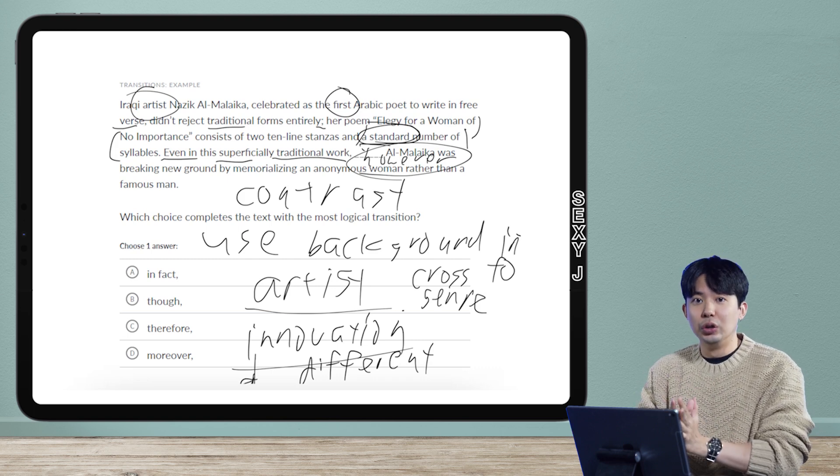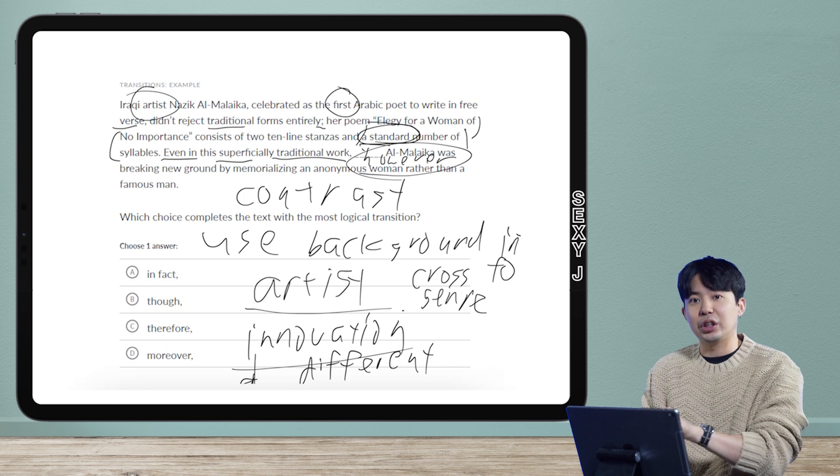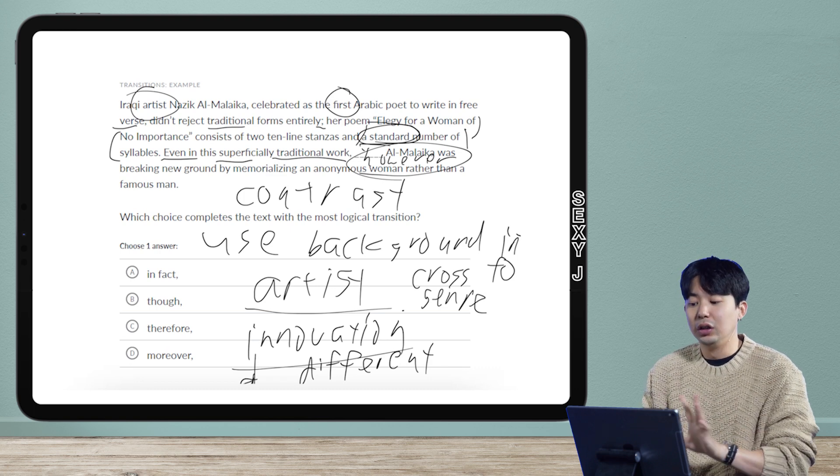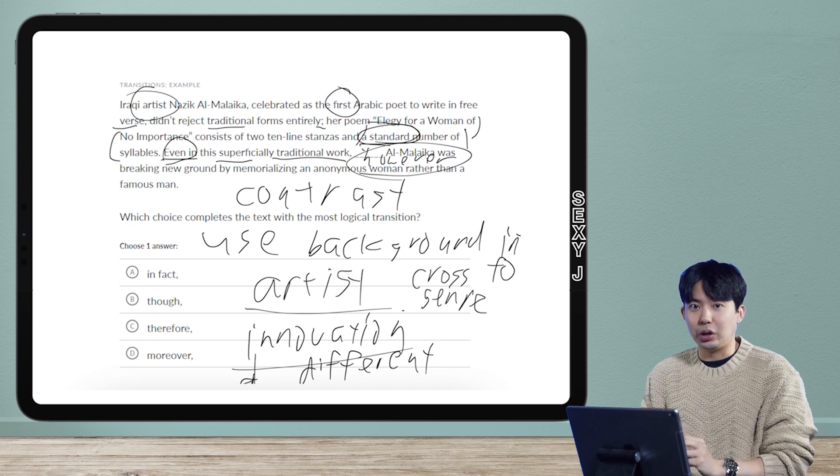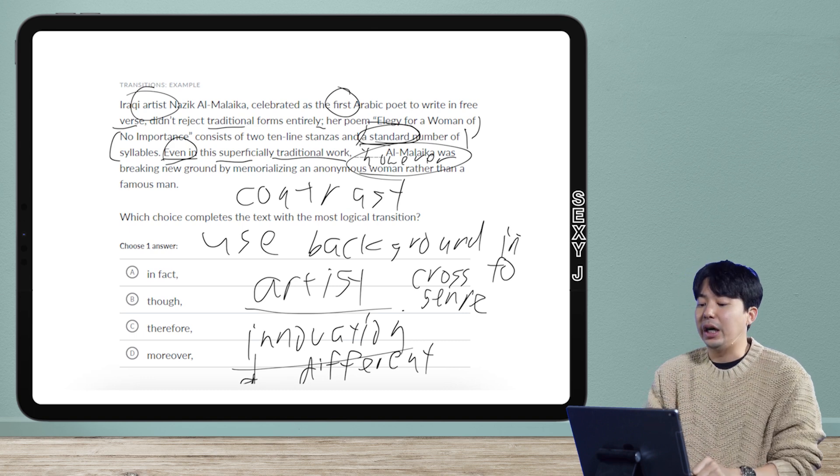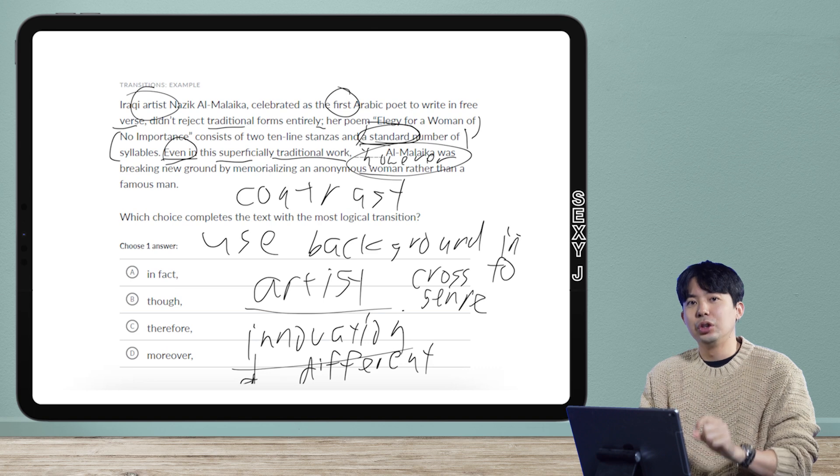I know if I have standard in the sentence right before, I have to come back to the new. Number two, I have the word 'even,' that's a contrast. Number three, I have superficially traditional.